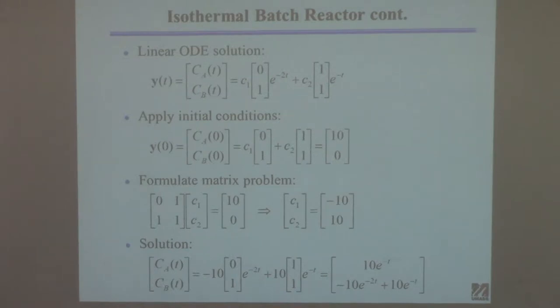And so now you can plug in those two solutions into the equation. There's minus 10, there's plus 10. And then you can multiply this out. So that's the solution for CA, and that's the solution for CB.